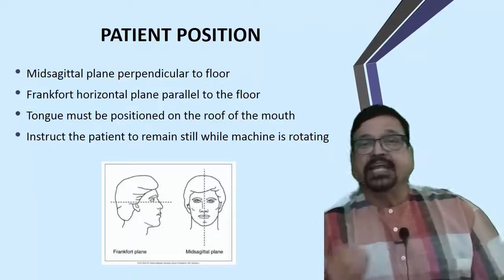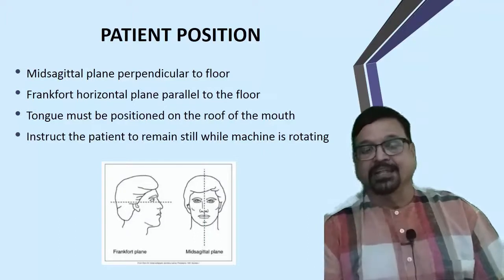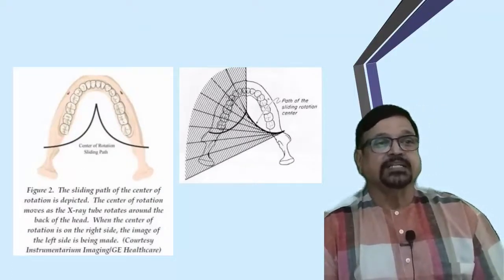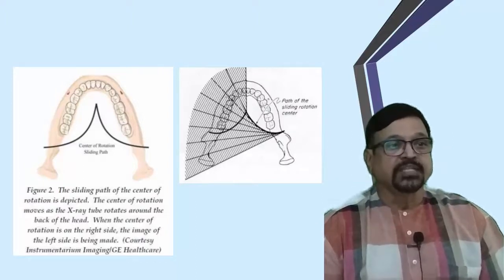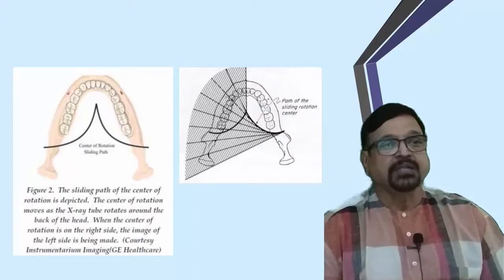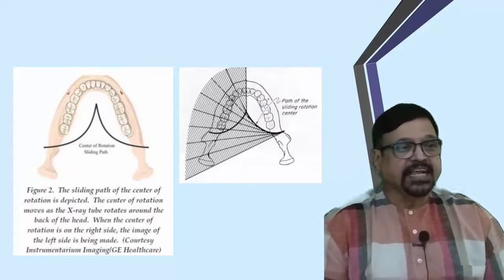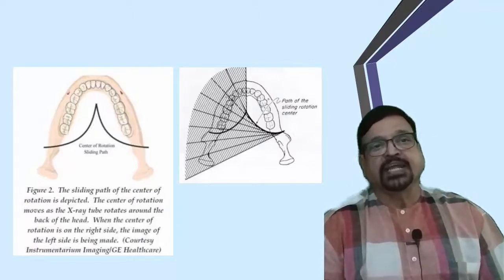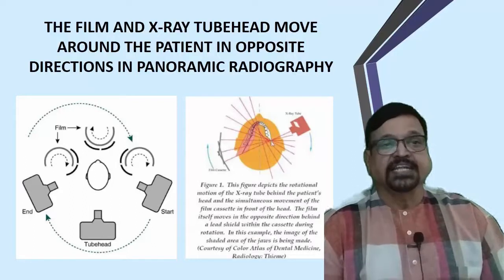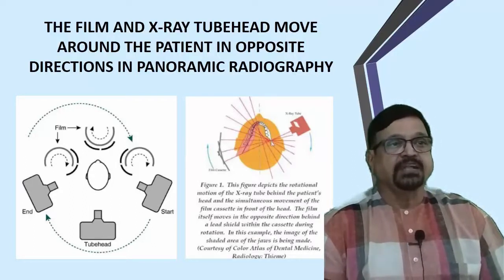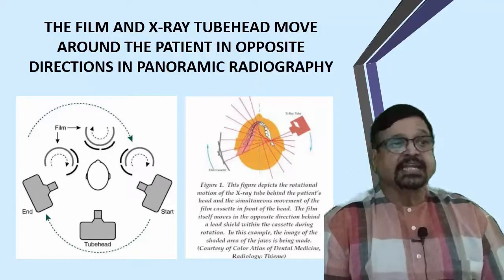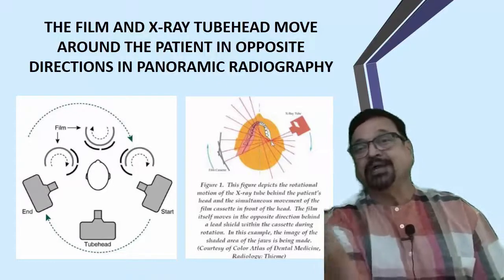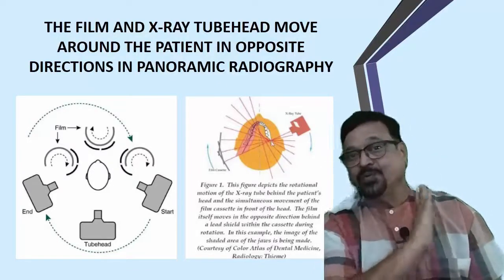The patient must be instructed to remain still - the machine is rotating and as long as it is moving around the head, the patient should not move. If the patient moves, object A, B, C, D will shift and get blurred. The center of rotation moves as the tube rotates around the back of the head - when the center of rotation is on the right side, the image of the left side is being made. Not all structures get focused; only the teeth at the periphery get focused while those at the center are unsharp.